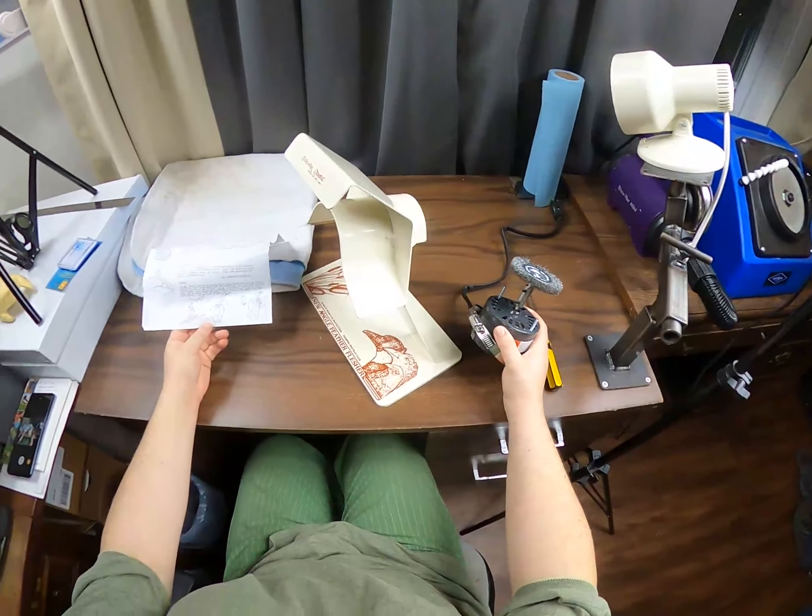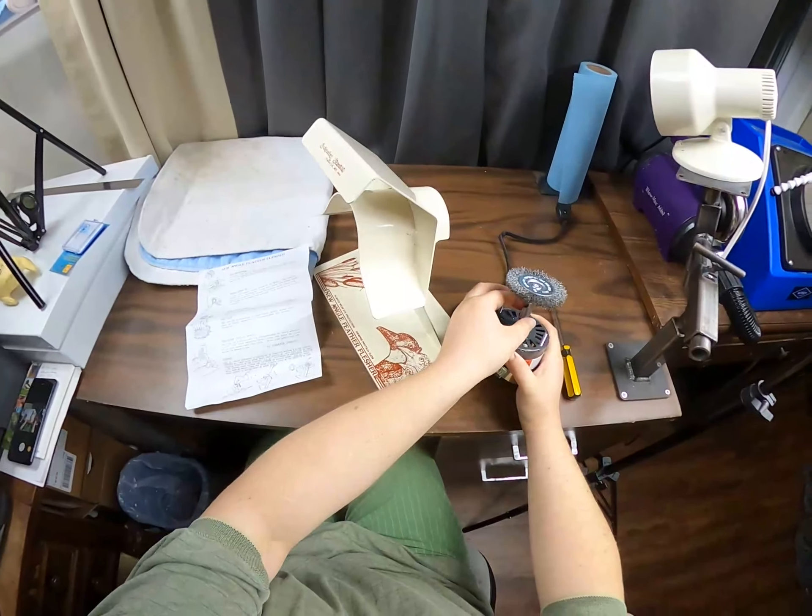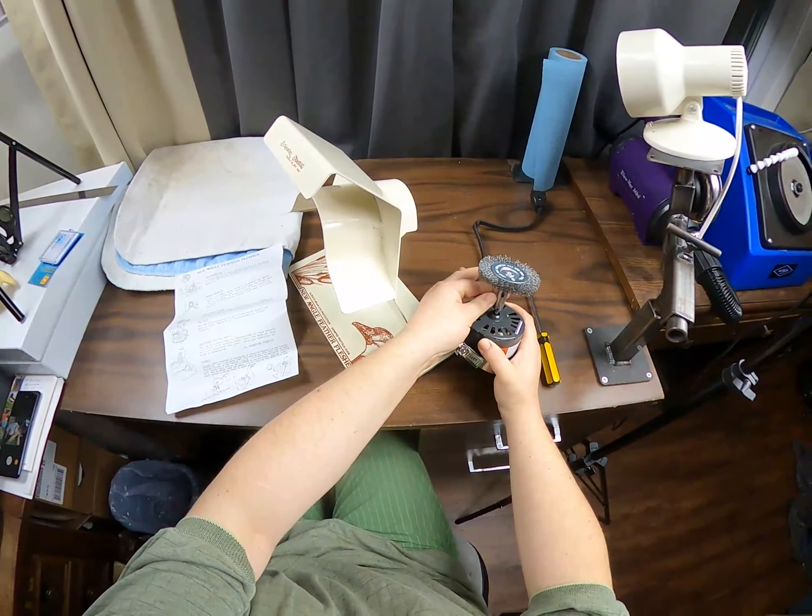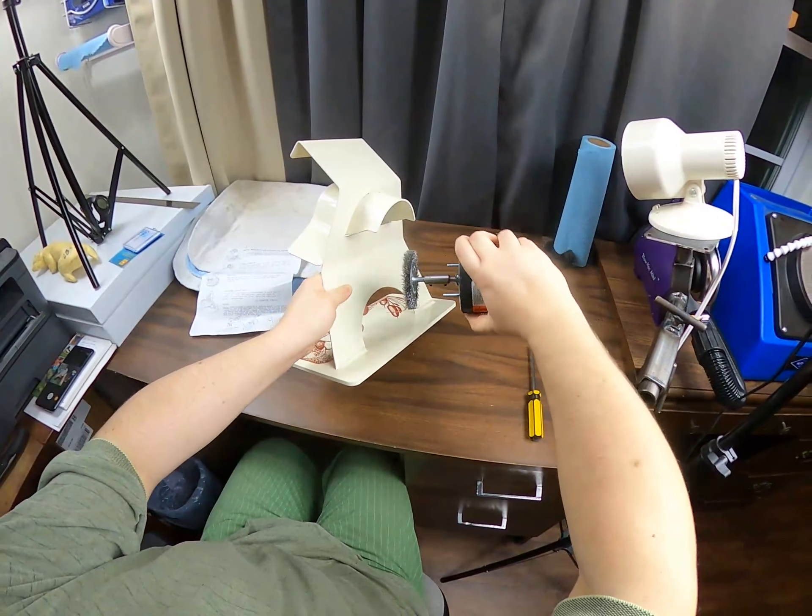Hey everyone, thanks for joining us for another video. In this we're going to put together our new angle feather flusher that we got from Matuska taxidermy supply. It has three simple steps, but it came with one of the steps already done, which was to attach this here. So I'm just checking that and can see that it's perfectly fine.